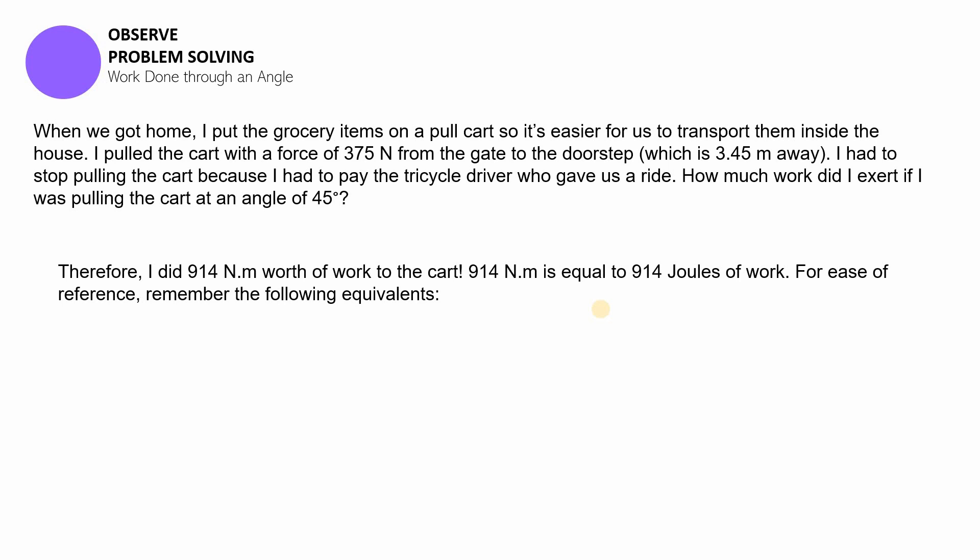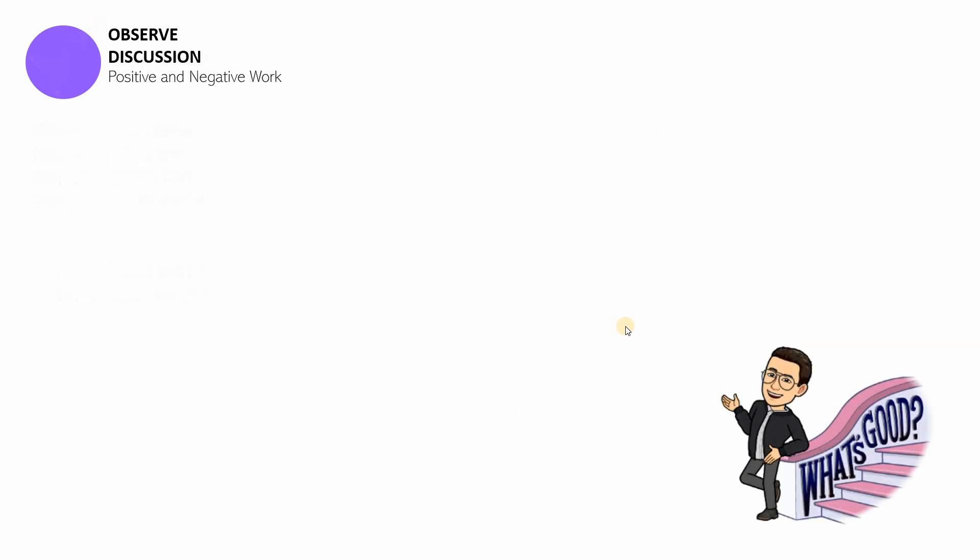Therefore, it means that I did 914 newton meters of work to the cart. Now, if you're not familiar with newton meter as unit, it's actually equivalent to the same amount of absolute value for joules because 1 joule is equal to 1 newton meter. So, therefore, if I have 914 newton meters, I actually have 914 joules of work. Now, for ease of reference, remember the following equivalents. Take note of them. You might be needing them in your independent problem-solving exercise.